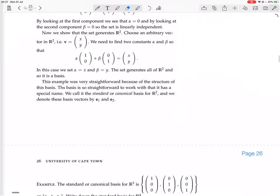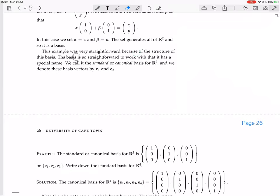This example is very straightforward because of the structure of the basis. The basis is so straightforward to work with that it has a special name. We call it the standard or canonical basis for R², and we denote these basis vectors by E₁ and E₂.